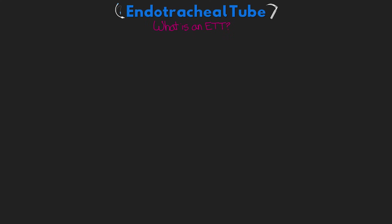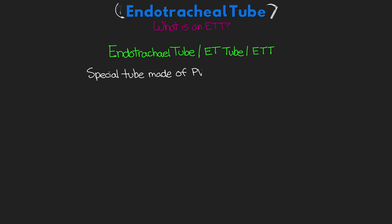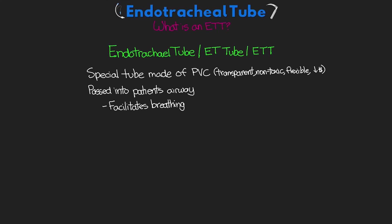In this lesson I'm going to review the basics of the ET tube and ensure a good understanding of this piece of equipment before going into the subject of intubation in the next lesson. Our endotracheal tube, ET tube, or ETT is a special tube made of plastic — more accurately a polyvinyl chloride or PVC — which is a transparent, non-toxic, flexible, and inexpensive material. The endotracheal tube is passed into a patient's airway and helps to facilitate breathing or, more practically, ventilation.